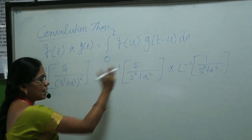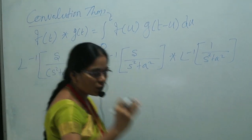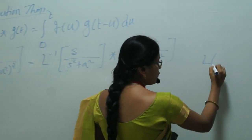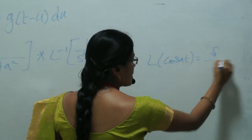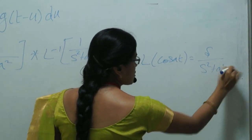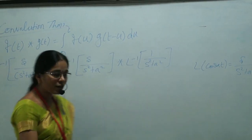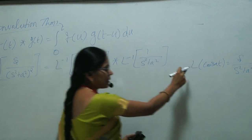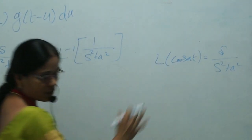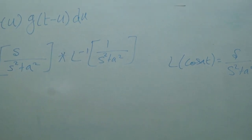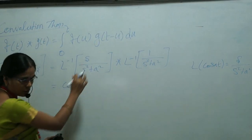For L inverse of s/(s² + a²): we know the Laplace formula L{cos(at)} = s/(s² + a²). So L inverse of s/(s² + a²) equals cos(at). Use this formula.